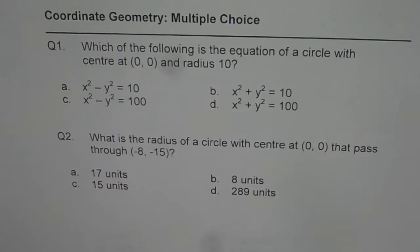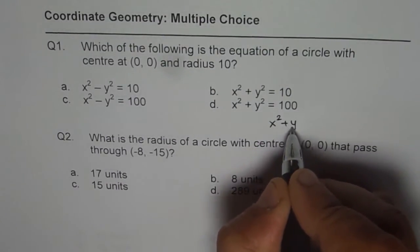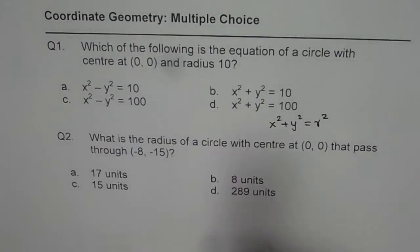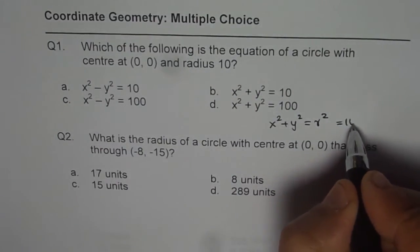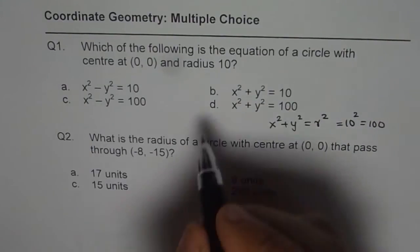The first one is direct application of the formula, which you know, a circle through the center is x square plus y square equals to r square. Since the radius is 10, it should be equals to 10 square, which is indeed 100. So the right choice is D.